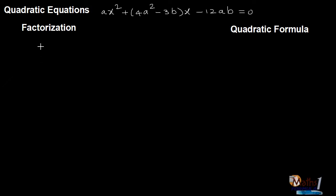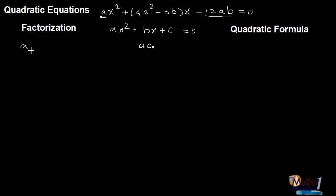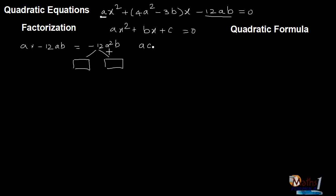Let's do our basic factorization method. Although there are no numbers, we'll just go with that. So ax squared — this is in the format of ax² + bx + c. I need to have the product of a and c. In this scenario, a is a and c is minus 12ab, which gives minus 12a²b. I need to find two values where if I multiply them, I get minus 12a²b.